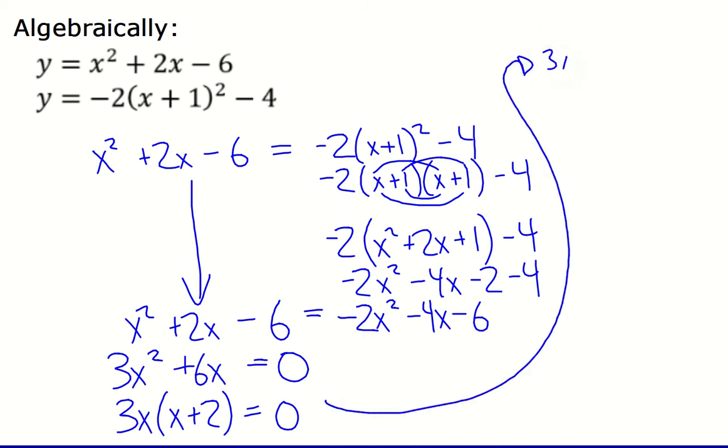So by the zero product property, one of those factors has to equal 0. If 3x equals 0, then x equals 0. And if x plus 2 equals 0, then x would equal negative 2.